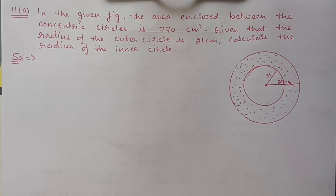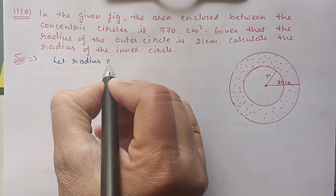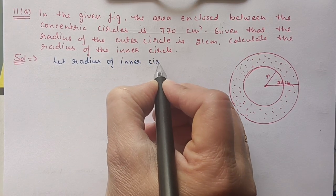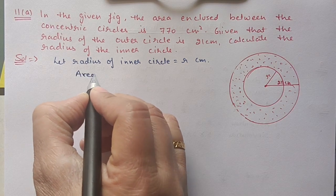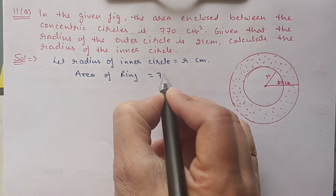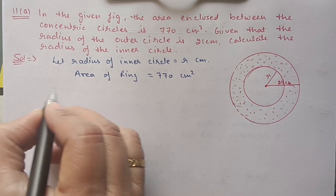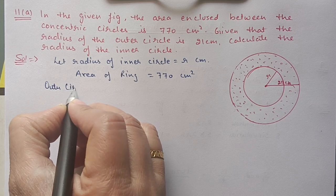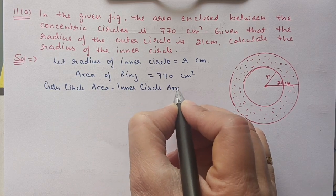Next we have Question 11 part (a). In the given figure, the area enclosed between concentric circles is 770 centimeters squared. The radius of the outer circle is 21 centimeters. Calculate the radius of the inner circle. Let the radius of the inner circle equal r. The ring area is 770 cm², which equals outer circle area minus inner circle area.